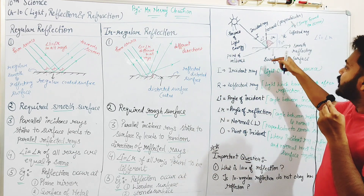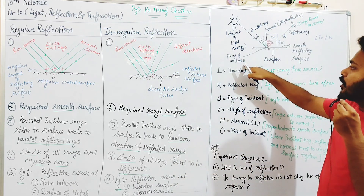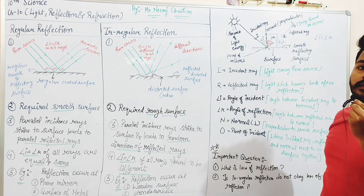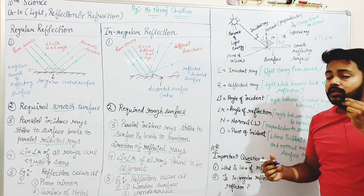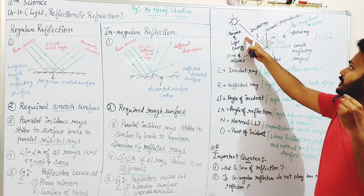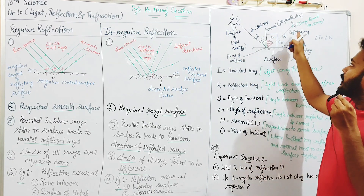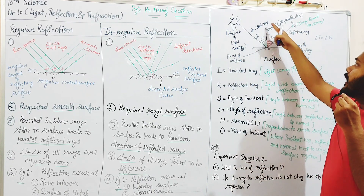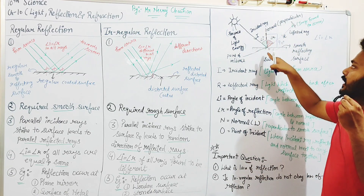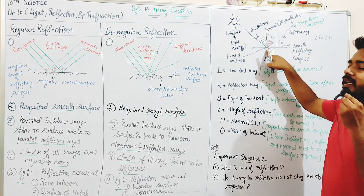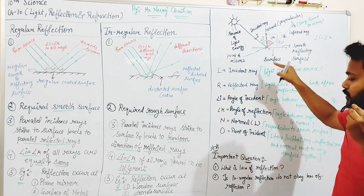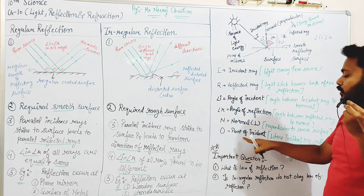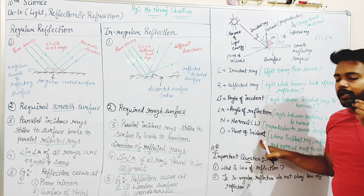There is one more component — the Point of Incidence. This is the point at which the incident ray, reflected ray, and the normal all meet. This is called the Point of Incidence.